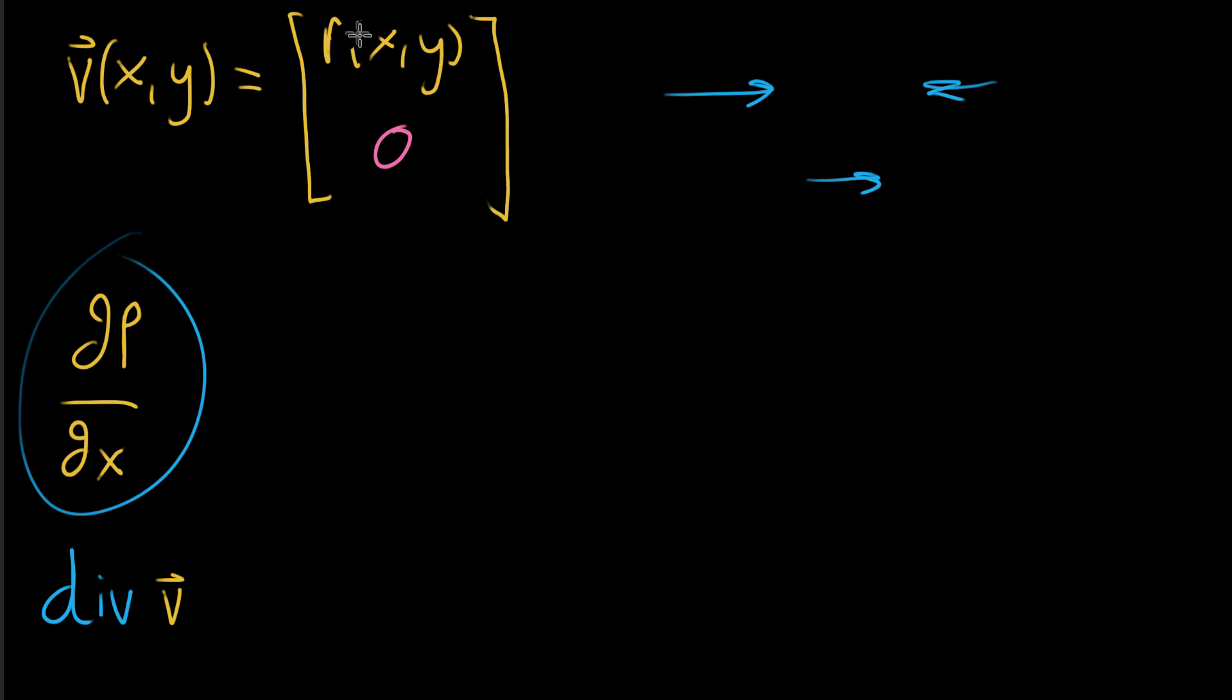it should definitely have something to do with the partial derivative of p, that x component of the output, with respect to x. And here I want to do the opposite and say, what if we look at functions where that p, that first component, is zero, but then we have some kind of positive q component, some kind of non-zero, so positive or negative, y component.